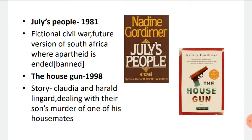Next we have 'July's People,' published in the year 1981. This novel was also banned. The story deals with a fictional civil war in which the writer imagines a future version of South Africa where the apartheid system has ended.